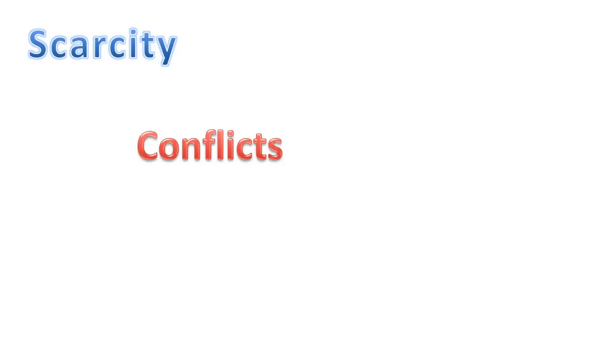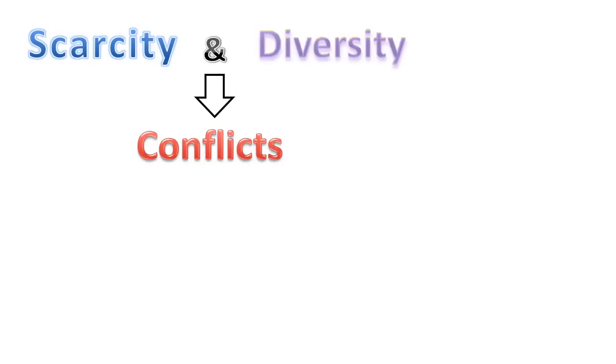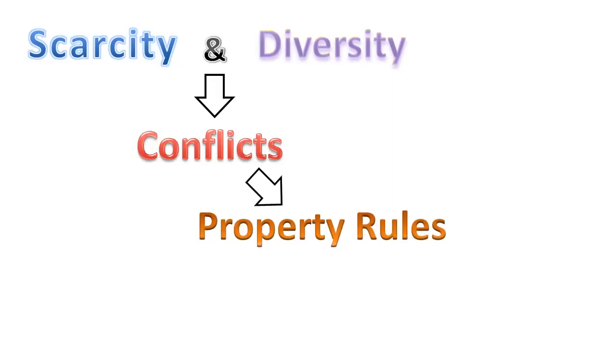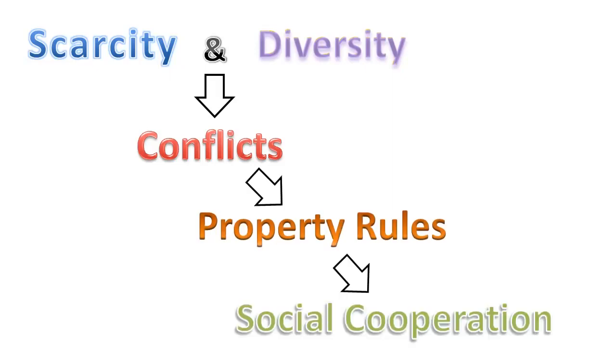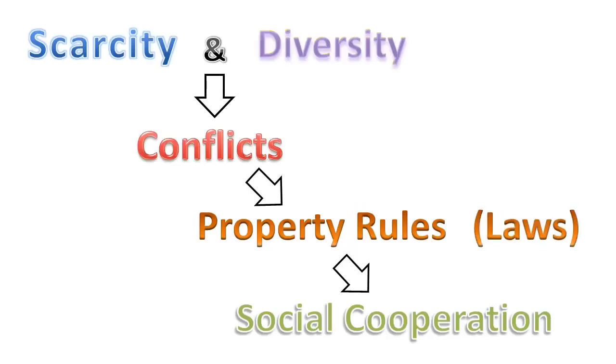Government is a territorial monopolist of law. But what is law? Interpersonal conflicts are possible due to material scarcity of resources and goods, and diversity of interests between individuals. The potential for conflicts makes property rules and ownership rights necessary for social cooperation. For example, apples are scarce, and if two people both want to eat a particular apple, they cannot both be satisfied. For conflict avoidance, we need property rules to establish who has the ownership right over the apple — that is, who has the right to decide how the apple is used. Laws are property rules that emerge from the resolution of conflicts.